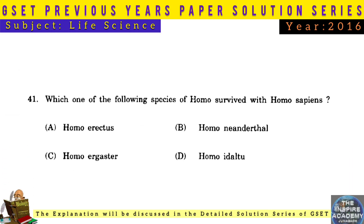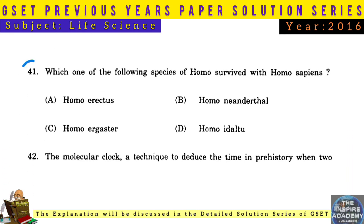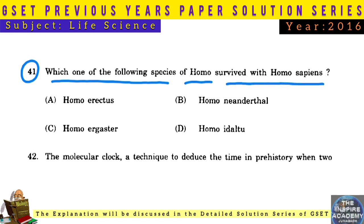Question No. 41: Which one of the following species of Homo survived alongside Homo sapiens? Answer: Homo neanderthalensis.